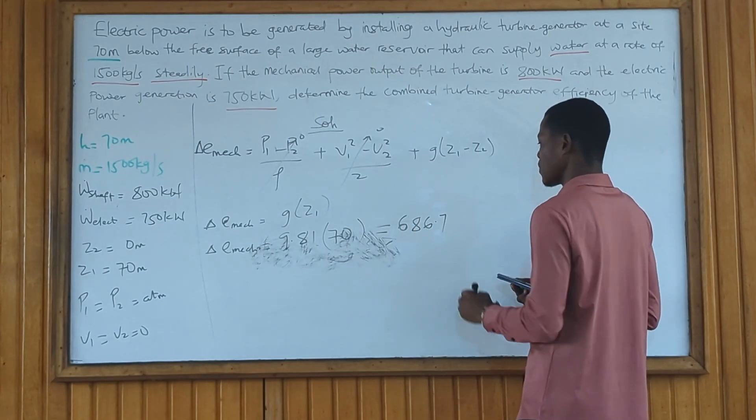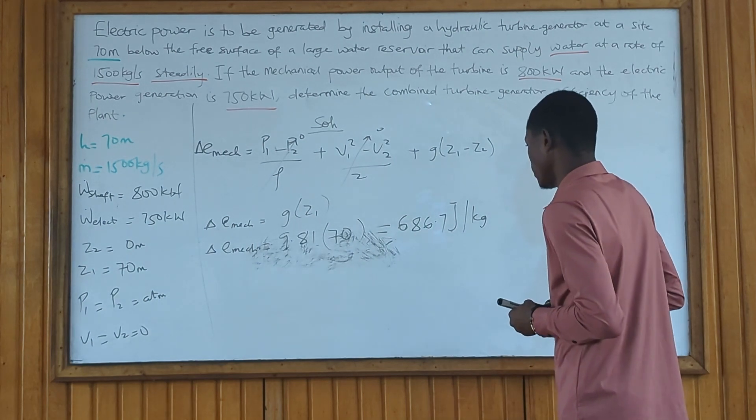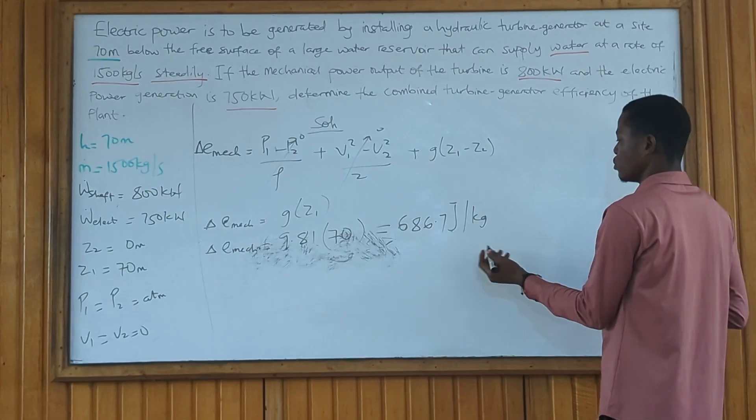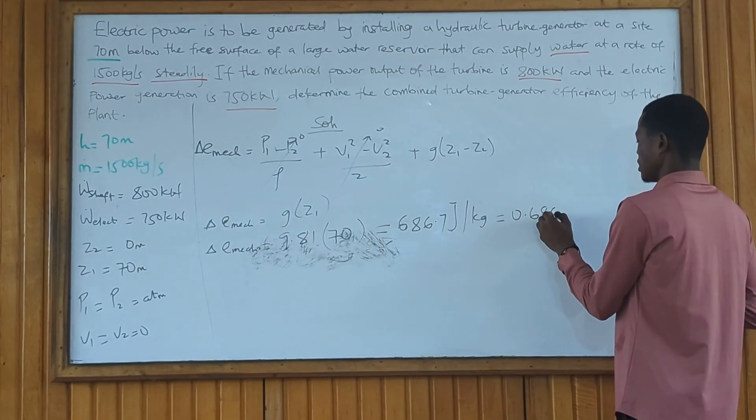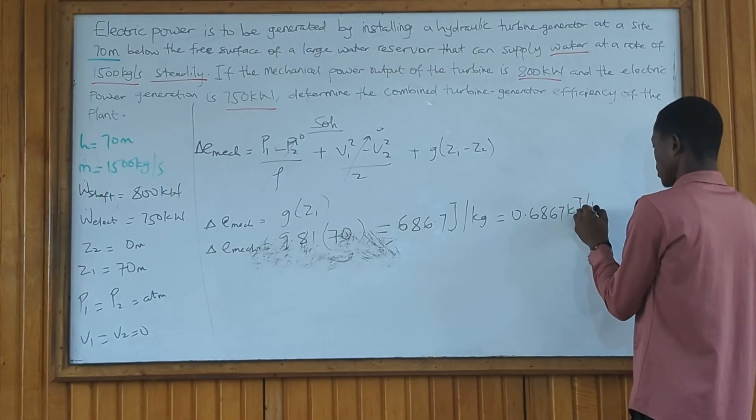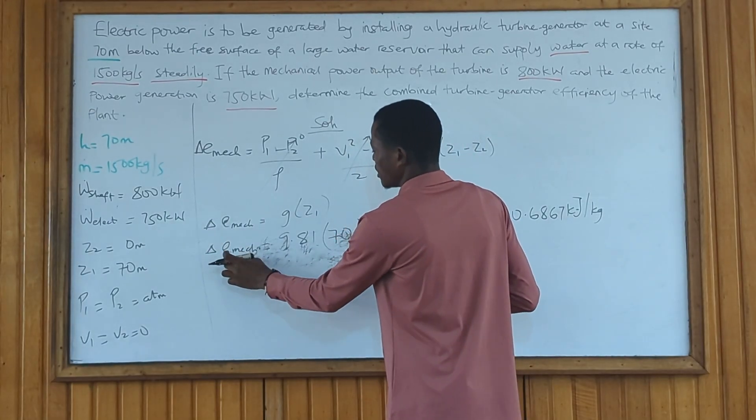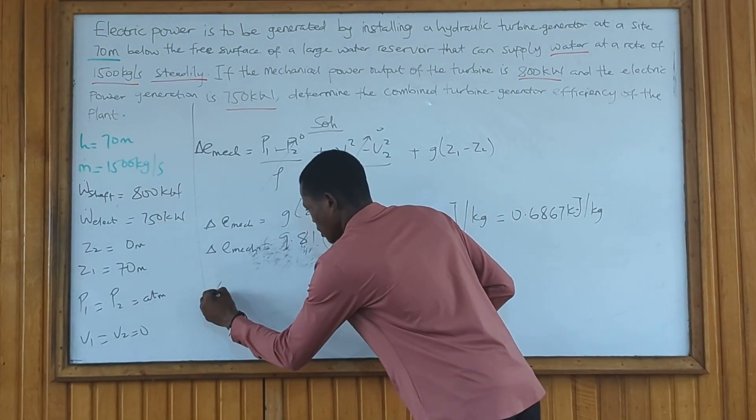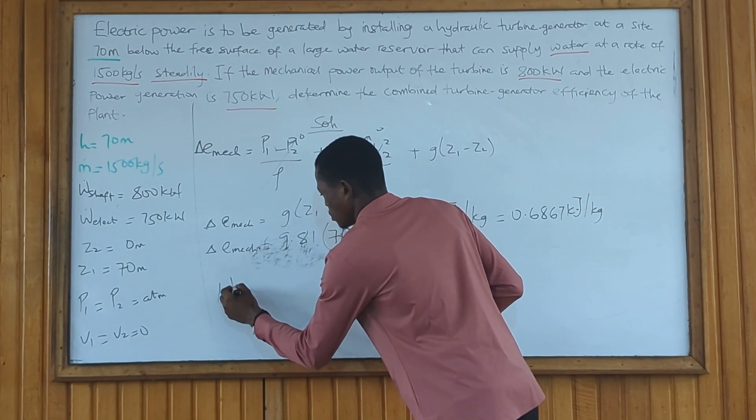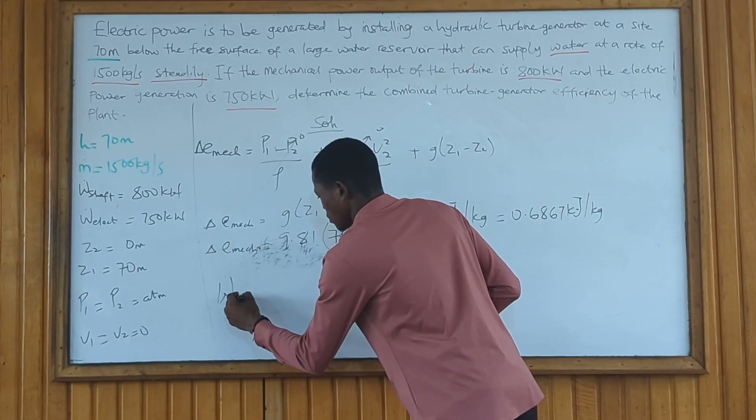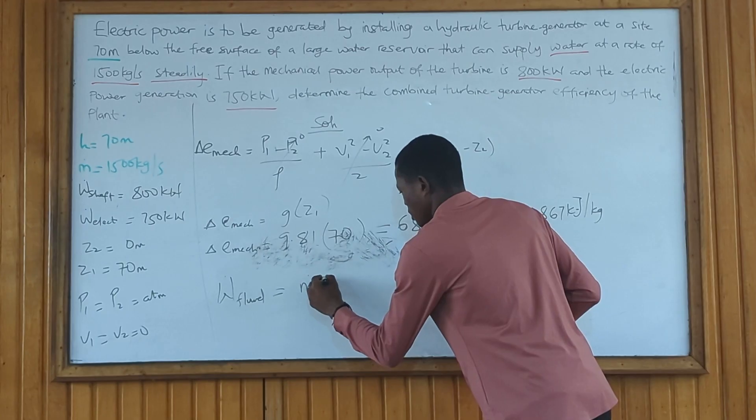To convert this to kilojoules per kilogram, divide by thousand. That gives us 0.6867 kilojoules per kilogram. But we want it in rate form, so we multiply by the mass flow rate. This gives us the mass flow rate times the change in mechanical energy.